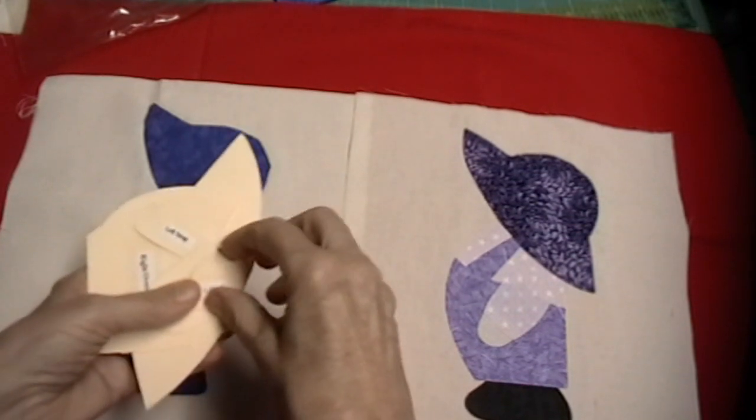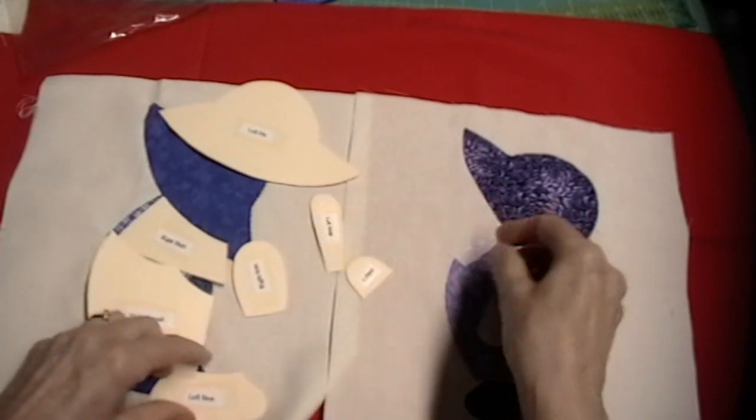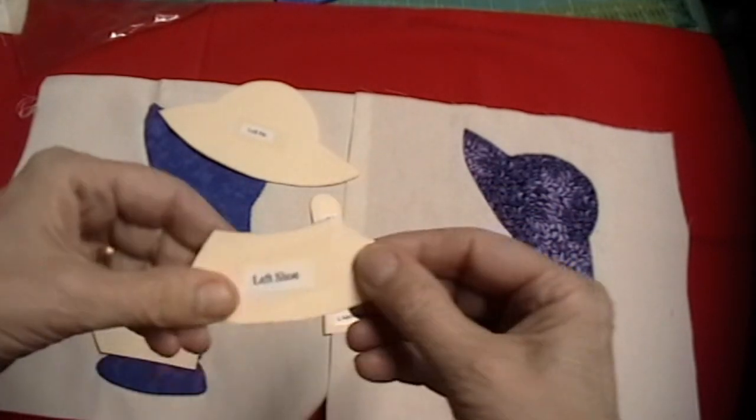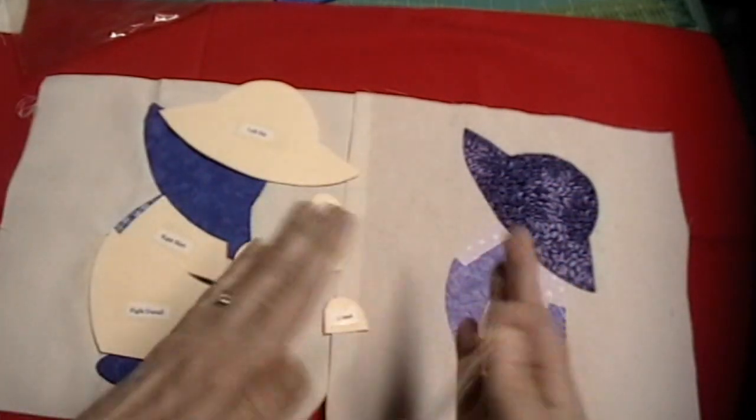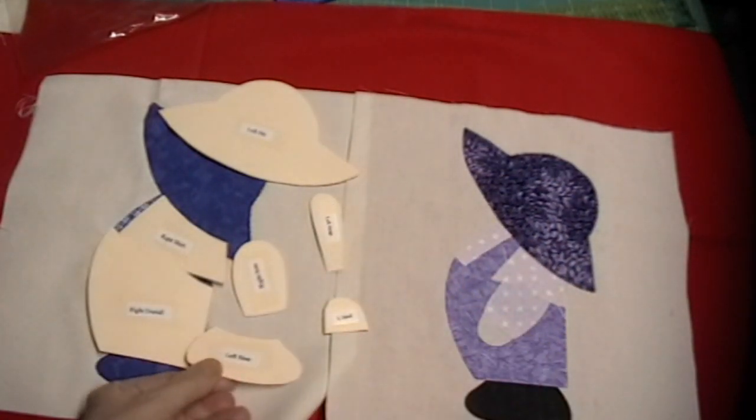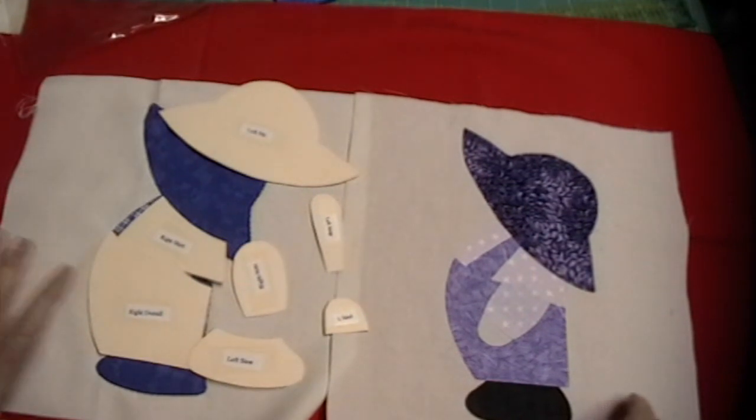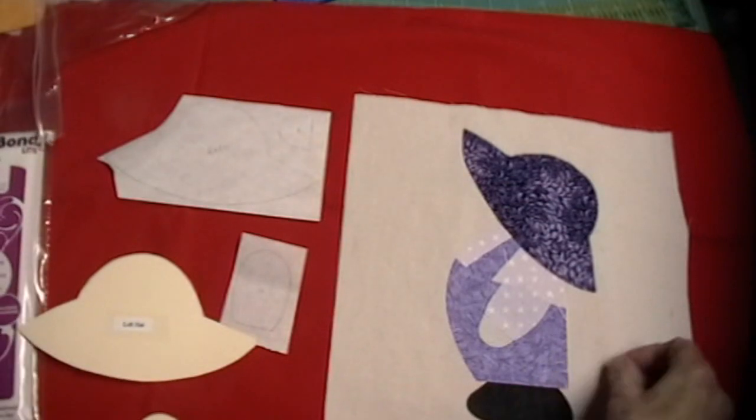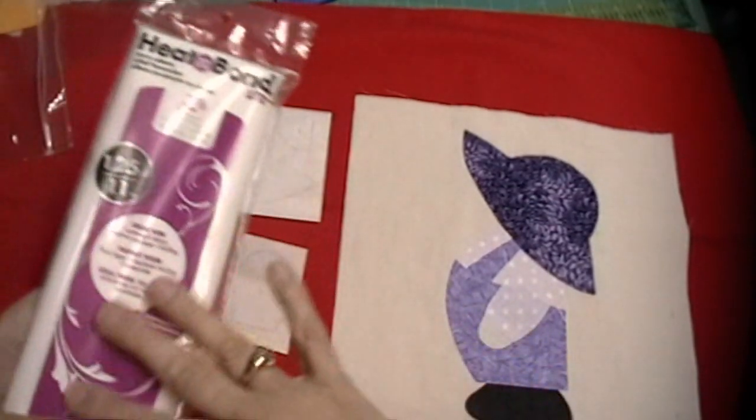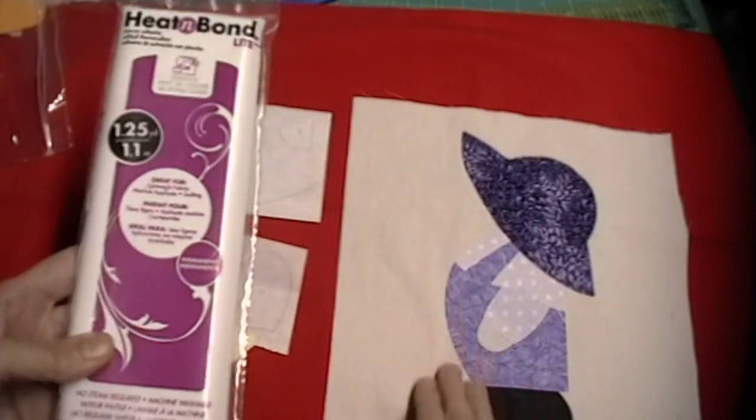If you ordered a pattern from me, you would get templates. You would get a template for each one of the pieces and they are labeled for the left side or for the right side, depending on which way you wanted your Overall Sam to face. When you get your templates, you have several choices of how you're going to applique. The easiest way is to use something that will attach it to the fabric so it can stay there where you can sew it down.